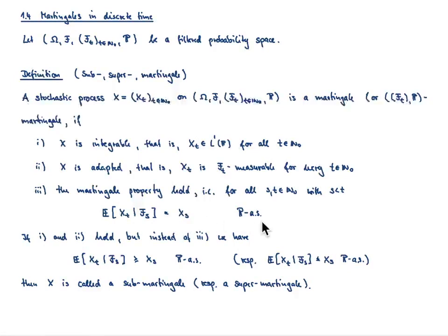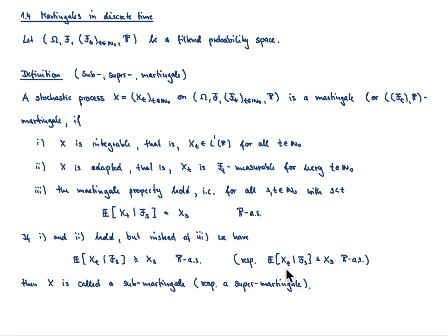The martingale property requires that the conditional expectation of x_t given the information stored in the filtration f_s is equal to the process at time point s, and this holds true P-almost surely. If you replace that equality sign by the corresponding inequality signs, you call the resulting process a sub-martingale if the conditional expectation of x_t given f_s is greater than or equal to x_s, or a super-martingale if it is less than or equal to x_s, P-almost surely.